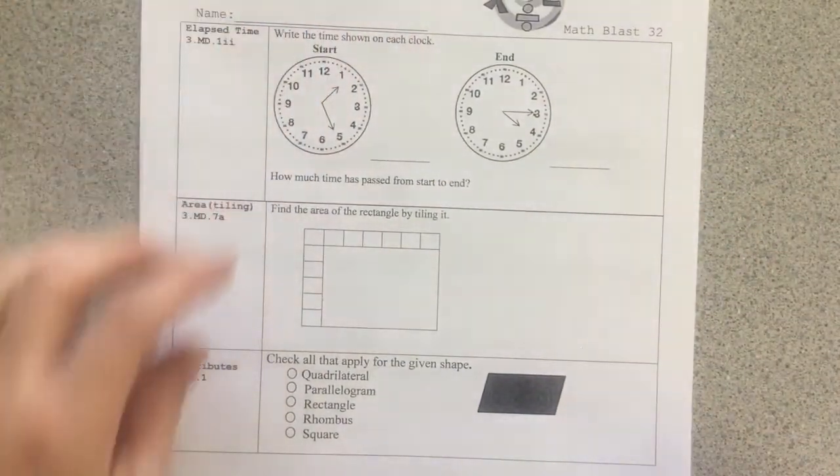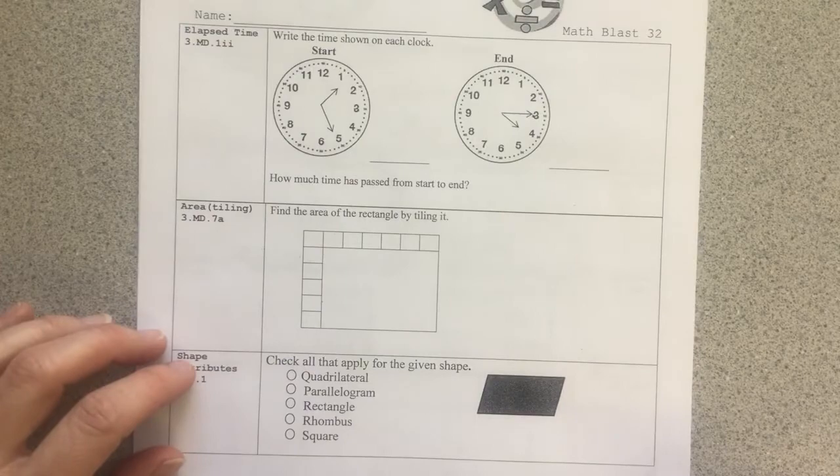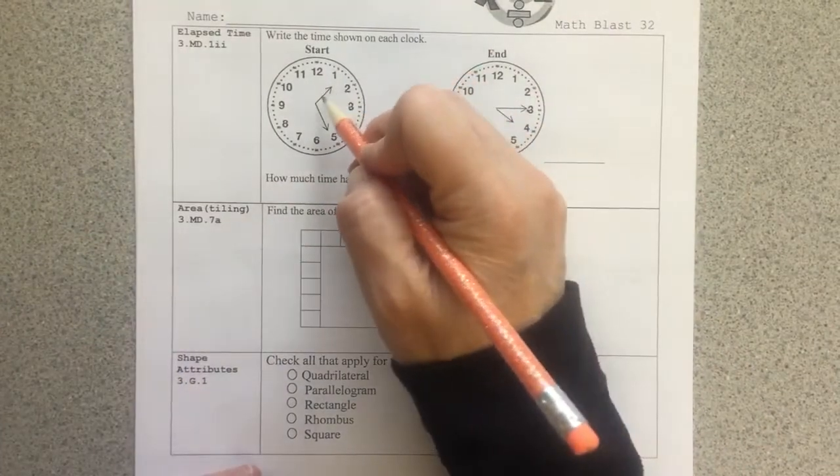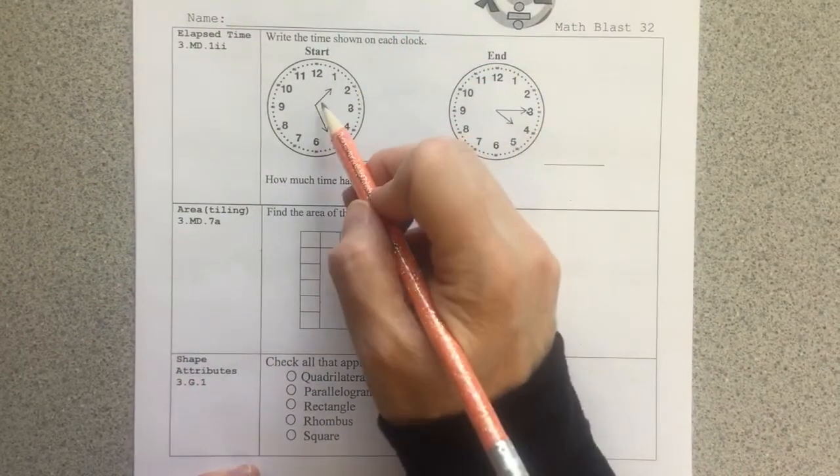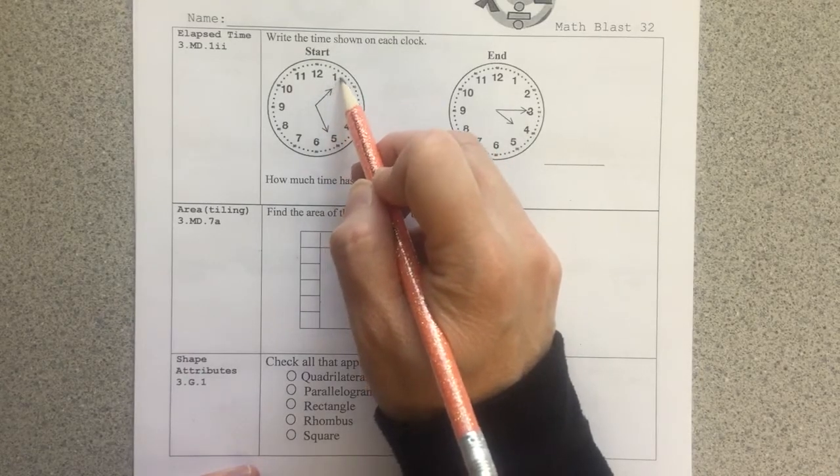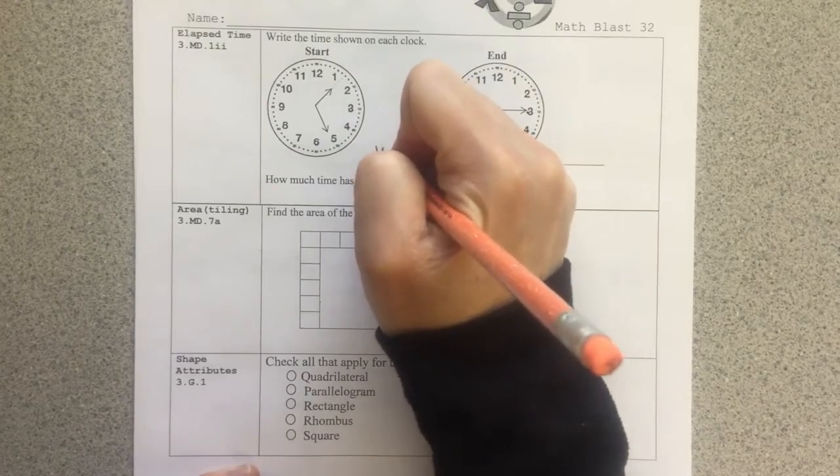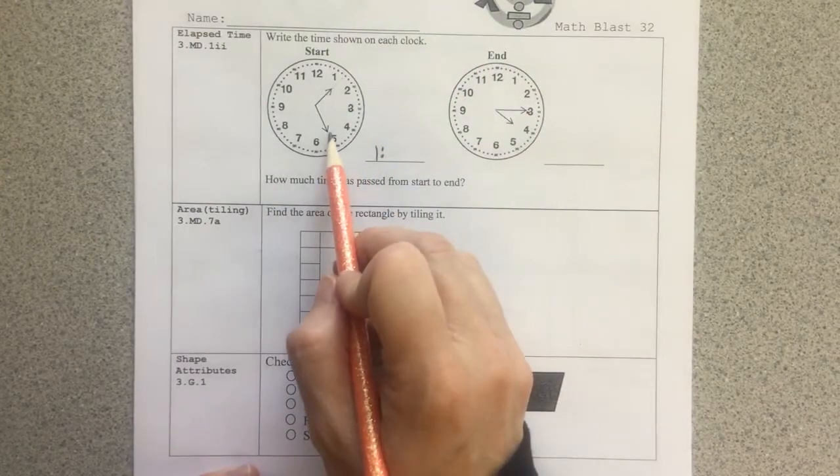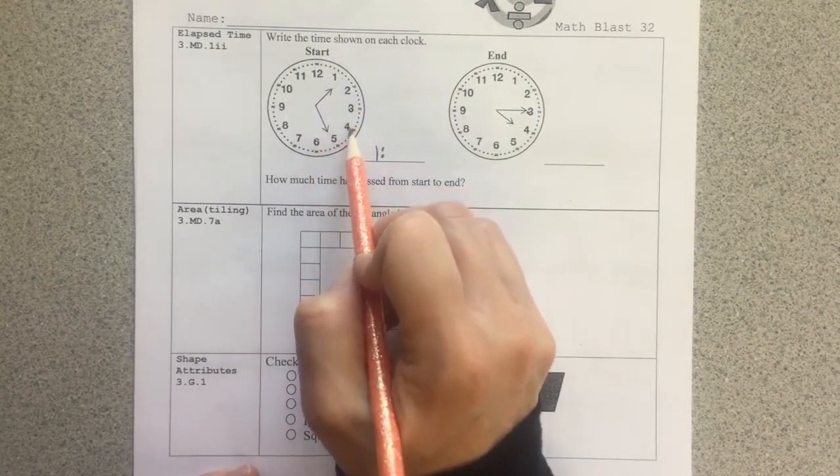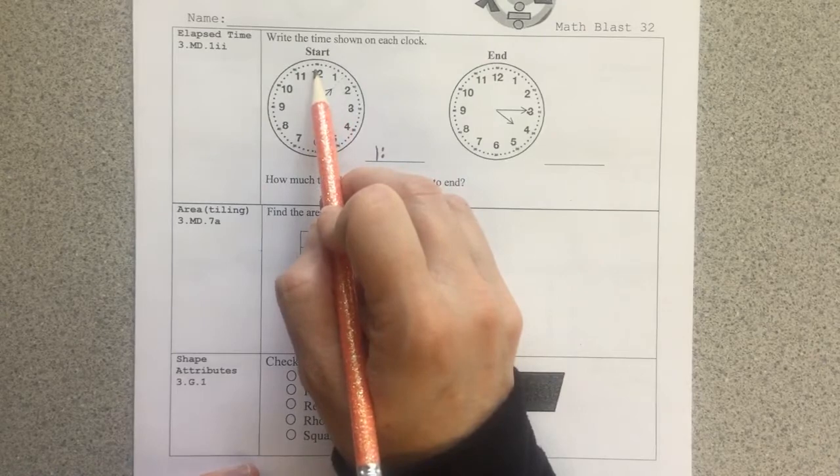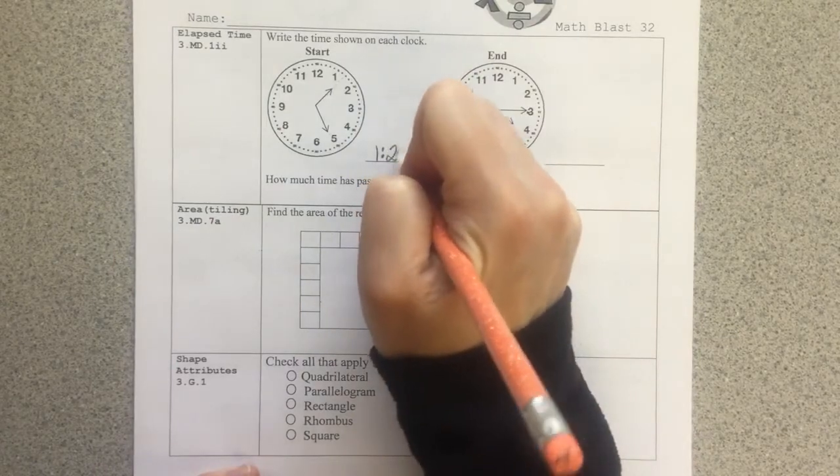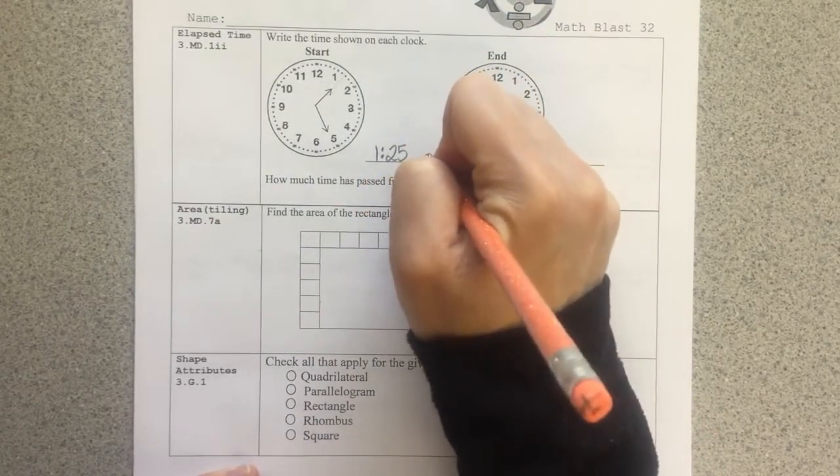Next we have elapsed time. Write the time shown on each clock. Here I can see the hour hand. When I'm telling time, I want to look at the short hand first. That helps with the hour. It is past the one, but not to the two. So we're still in the one o'clock hour. And then I look at the long hand to determine the minutes. Every dot on the clock here is one minute. Or I know that each number on the clock is a five minute jump here. So we can start at the top at o'clock and go 5, 10, 15, 20, 25. It is 1:25. Let's call that PM here.